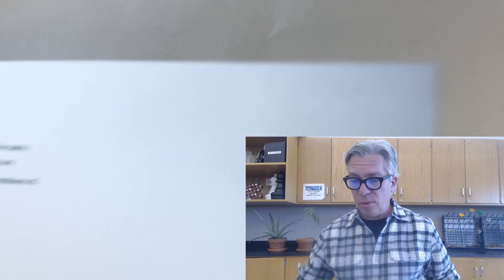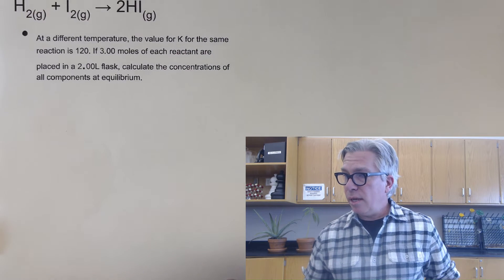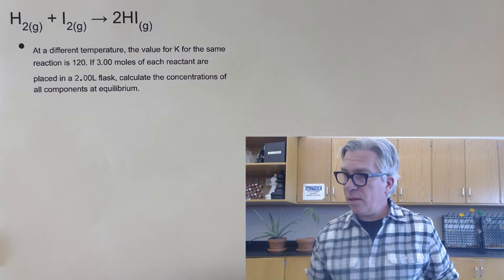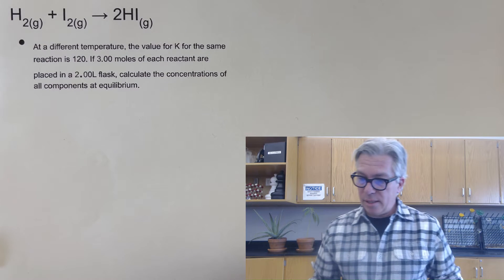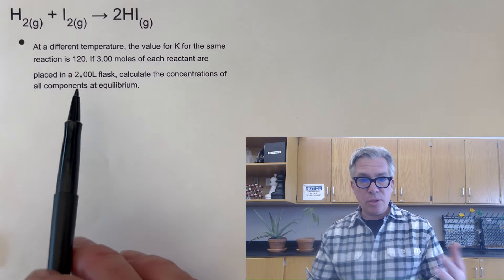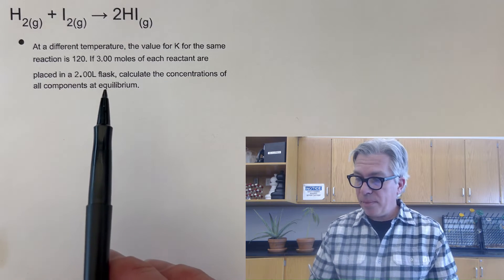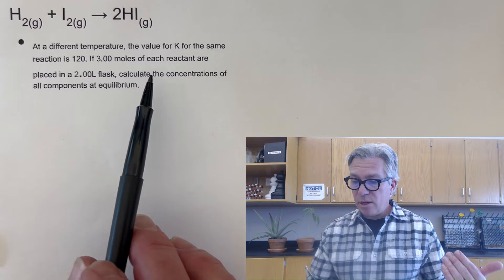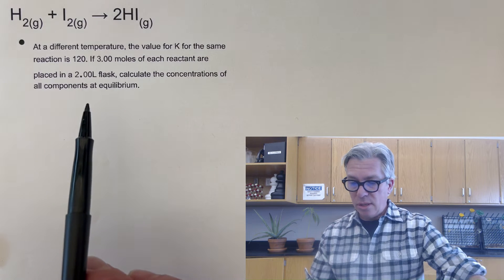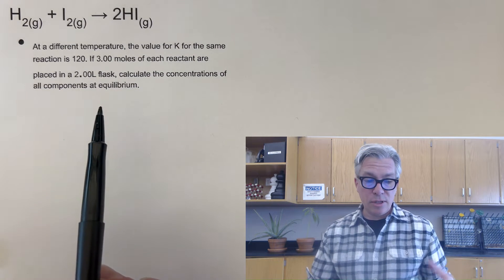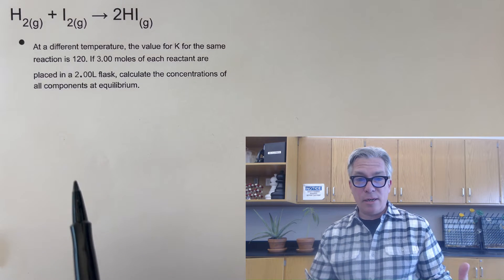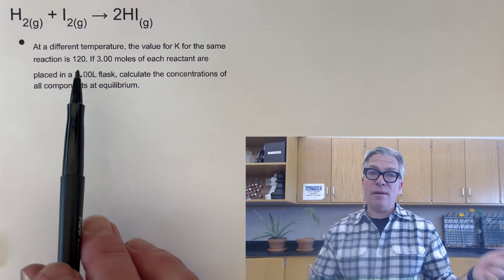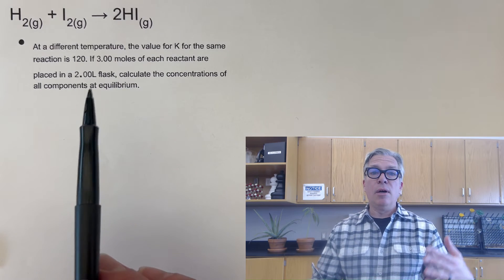Now take a look at this next one. I'm keeping the reaction the same so that it's consistent from one to the next. As you look at it, take a look at what is different about it. It says here at a different temperature, the K for the same reaction is now 120. So different temperature. If three moles of each reactant are placed in a two liter flask, calculate the concentrations of all components at equilibrium. Maybe you recognize this is a different kind of problem because in this problem, we already have the equilibrium constant value. We just don't have those final concentrations. So we're going in reverse essentially.